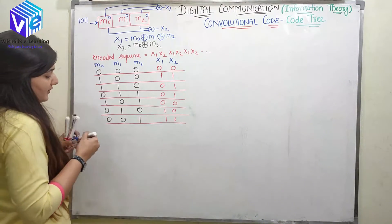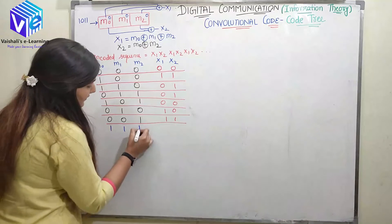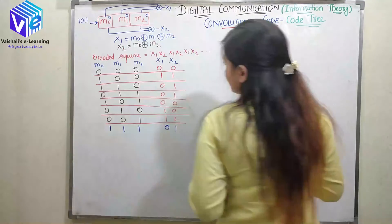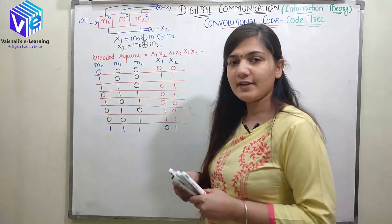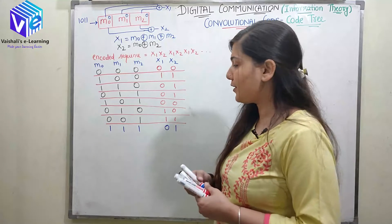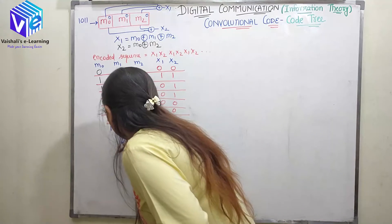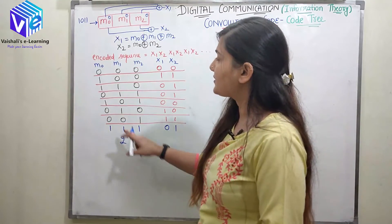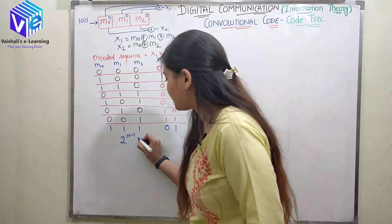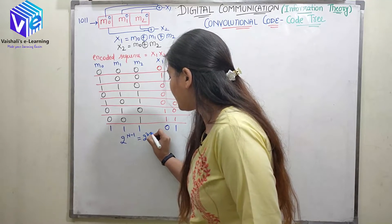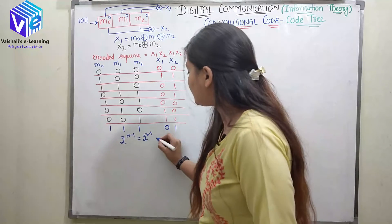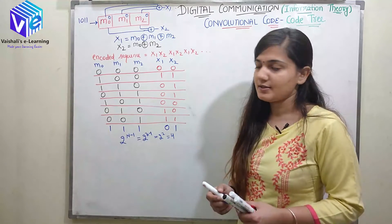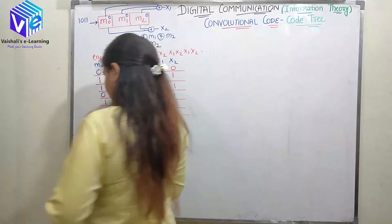For another sequence 111, the output is 01. After that, I told you we have 2 raised to power n minus 1 number of states, where n is the number of memory elements. Here I have 3 memory elements, so 2 squared equals 4 states. I represented the 4 states accordingly.